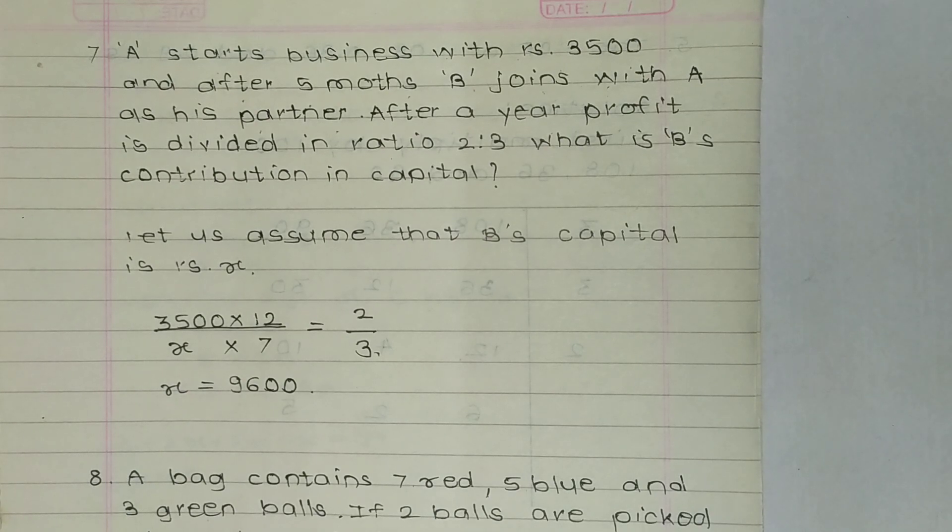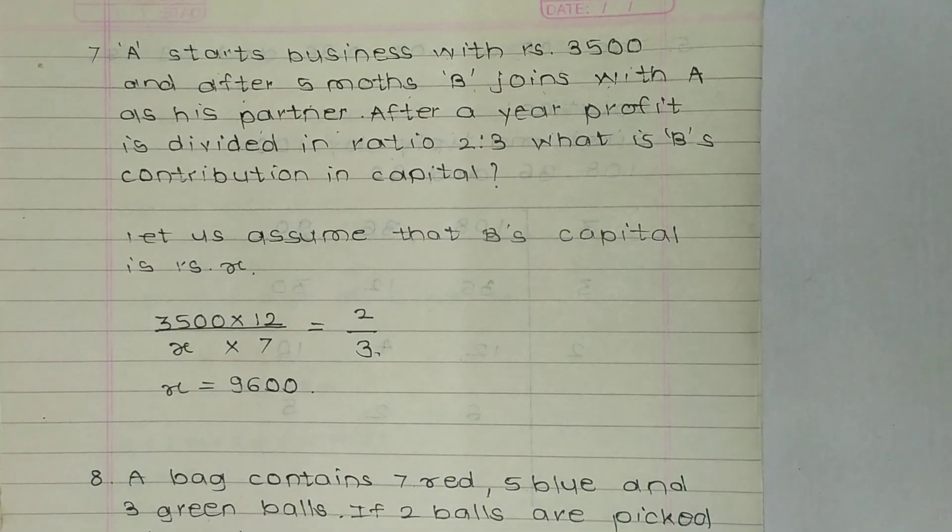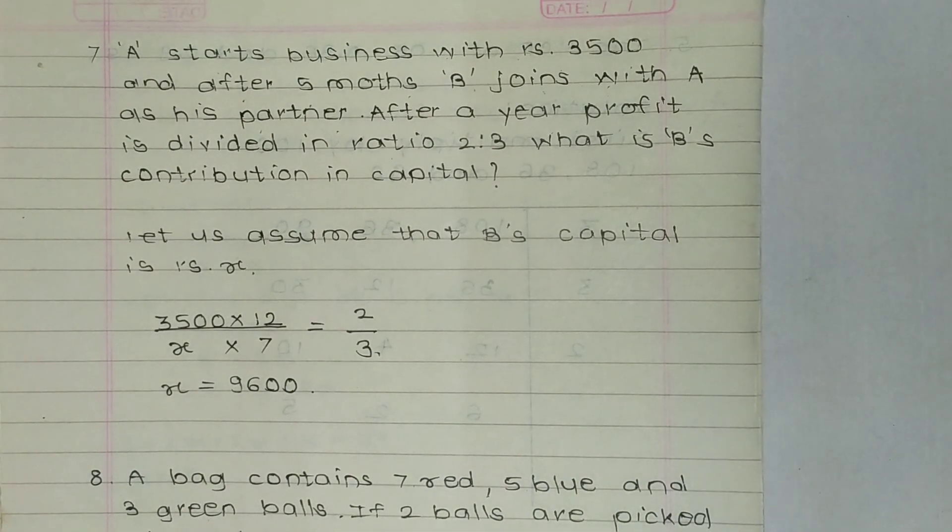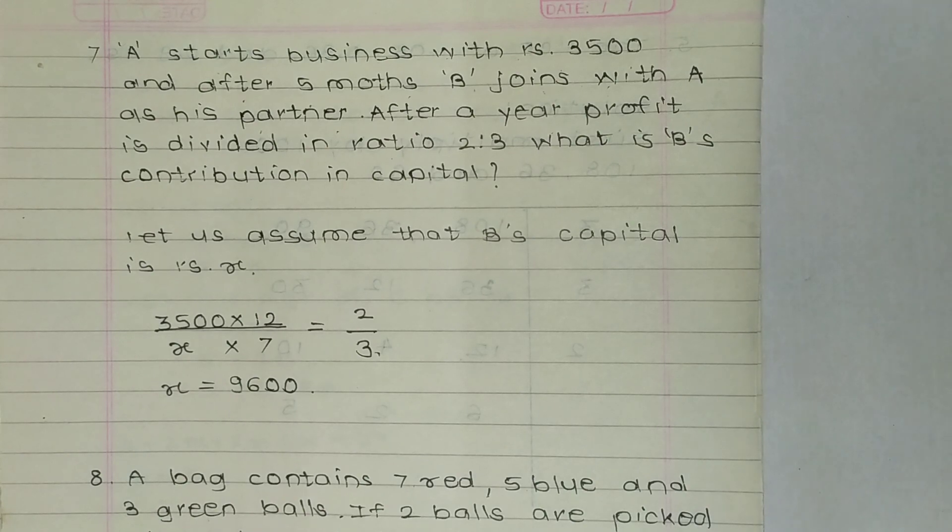Now 3500, that was A's capital, so 3500 into 12 is divided by B's capital, that is x into 7, because he was involved 7 months and A was involved 12 months. So now its ratio is 2 divided by 3. So here we are getting value of x, that is B's capital, so it is 9600.